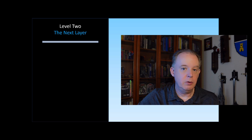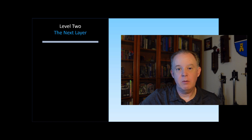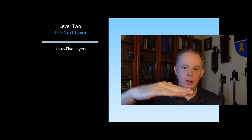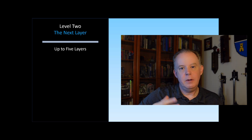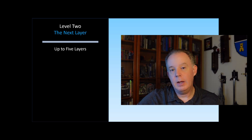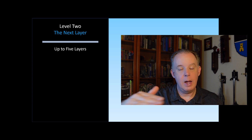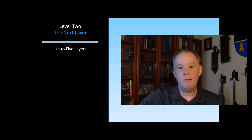Now we move on to level two, which I call 'the next layer' — a little bit of a pun, because one major feature of any level two device or above is the ability to incorporate layers. We kind of had layers at level one, where the template was one layer and your writing surface was another. The difference now is you can have multiple writing surfaces — most allow up to five — and you can interact with, erase, or hide individual layers without affecting the others.